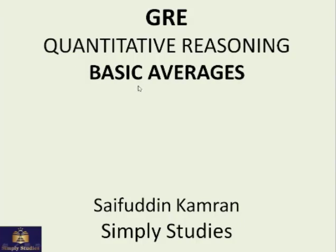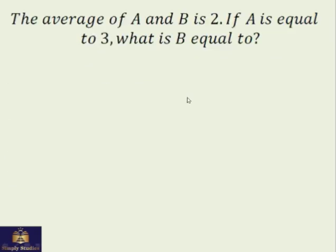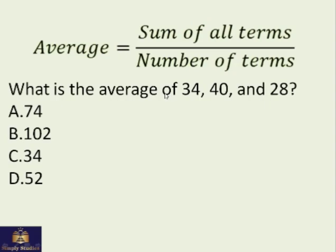GRE basic averages. What's an average? An average is the sum of all terms divided by the number of terms. For example, what's the average of 34, 40, and 28? According to the formula...